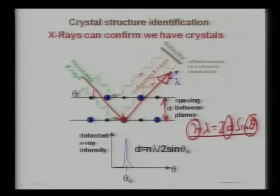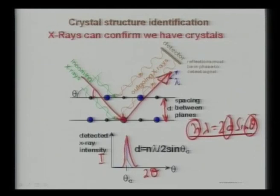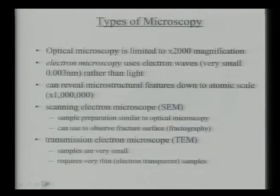Depending on the material composition, all materials will diffract X-rays at a characteristic wavelength and angle θ. Once you have an intensity versus 2θ plot, depending on whether the material is copper, nickel, or iron, it will have a characteristic peak — and that is how you can find out the presence of different materials or different phases in a microstructure.